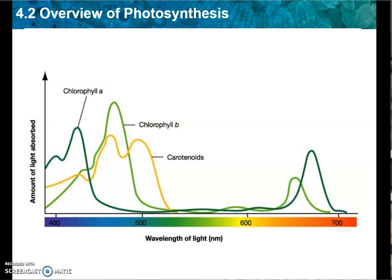Those other pigment colors are also responsible for why leaves get their fall colors. They always have those reds, oranges, and yellow color pigments, but there's so much chlorophyll A and B that we can't see them until fall, when the daylight starts getting shorter, the chlorophyll starts dying off, and then we can start to see those other colors. The yellow line represents the carotenoids and all the different colors they can absorb, versus chlorophyll A, which absorbs primarily here and here.